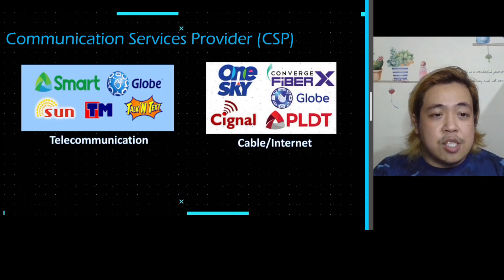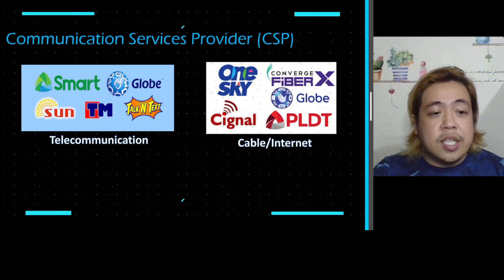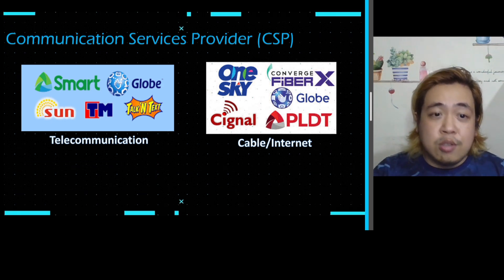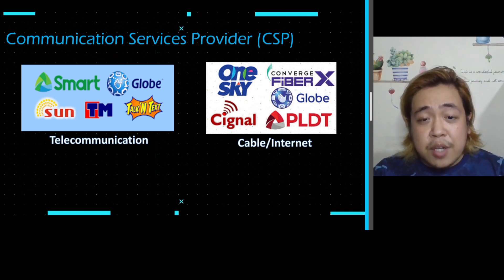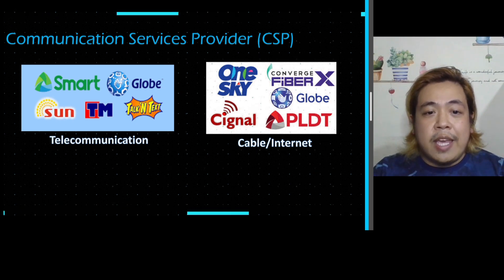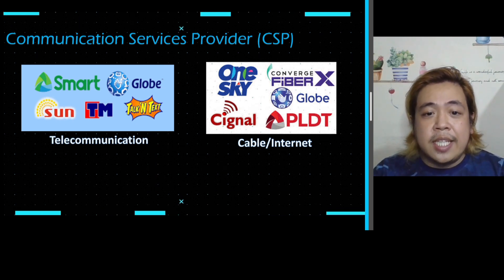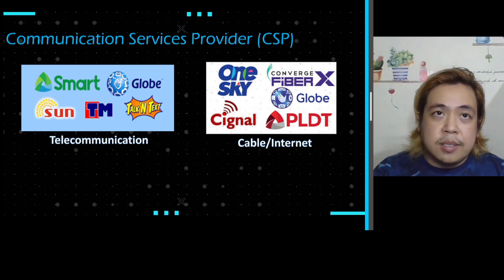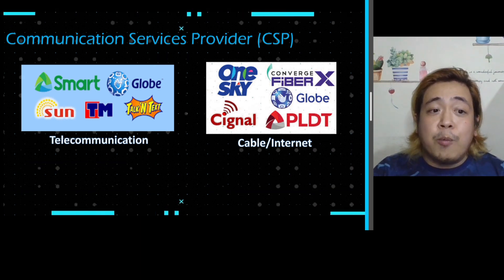These are the following providers. For telecommunications, we have Smart, Globe, Sun Cellular, Touch Mobile, and Talk & Text. For cable and internet, we have OneSky, Converge, Signal, Globe for internet, and PLDT, which is tied up with Smart.